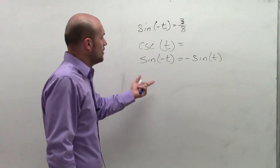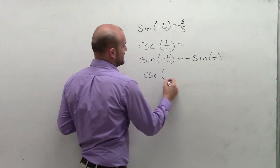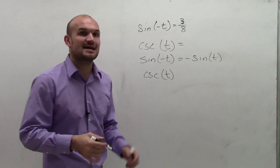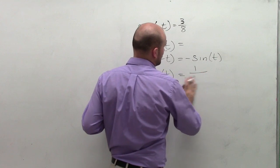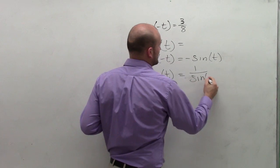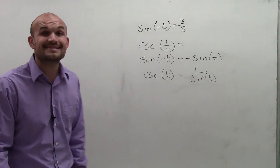What we need to understand is how cosecant and sine are related. Remember, cosecant and sine are what we call reciprocal identities, or reciprocal functions, meaning that cosecant of t equals the reciprocal, 1 over sine of t.